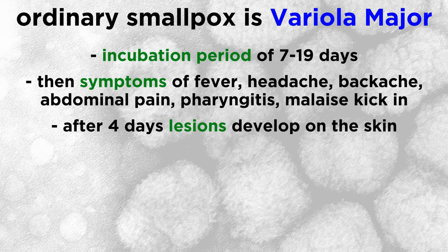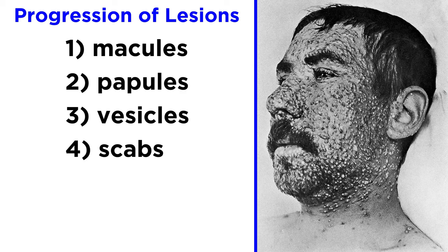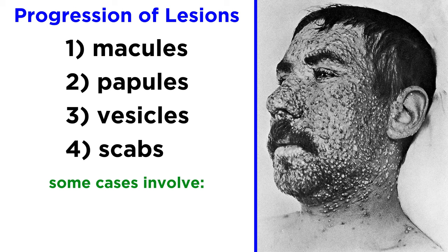After 4 days, the fever typically subsides and rash lesions develop on the skin. Lesions begin on the oropharynx, spreading to the face and extremities, then trunk, followed by the palms and soles of the hands and feet. These lesions progress from macules to papules to vesicles over the next 4 to 5 days, then forming scabs, which shed about 14 days after the rash began.